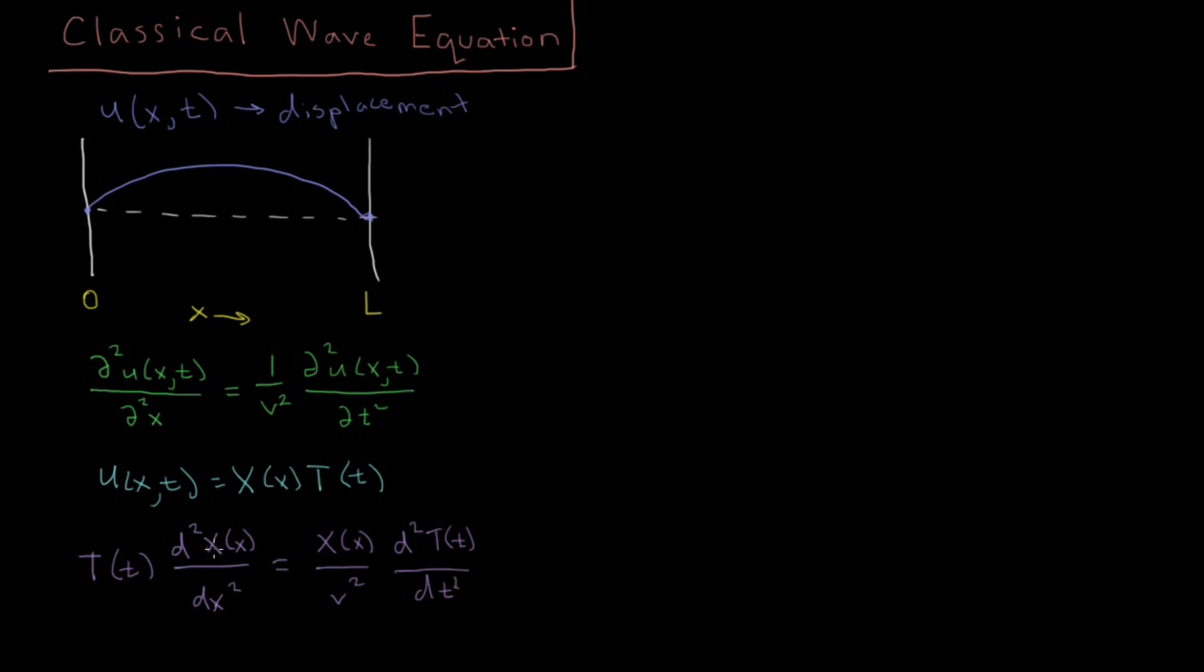Now we try to isolate the variables on each side, so we try to get all the things that depend on x on one side, all the things that depend on t on the other side. So what we're going to do is divide both sides by X(x) and T(t). So dividing both of those, we're going to cancel out the x on the left here, and we're going to get a t on the bottom, and we're going to cancel out this t over here, and we're going to get an x on the bottom. So rewriting this equation now, once we've divided by both sides, we're going to get 1 over X(x), d squared x dx squared, equals 1 over v squared T(t), second derivative of t with respect to time.